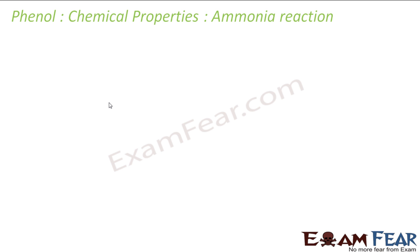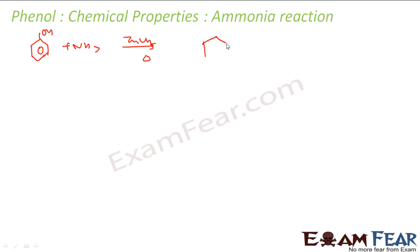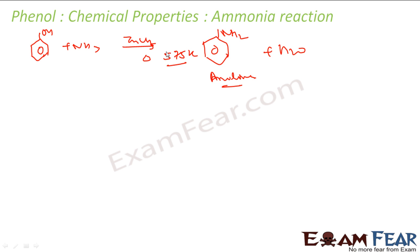The next is the ammonia reaction. It's pretty simple — phenol (OH) reacts with NH3, adding ZnCl2 and heat. What you get is NH2 (aniline) and some water. You need a very high temperature — around 575 Kelvin — and very high pressure.